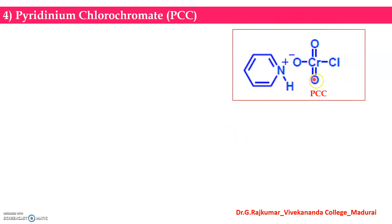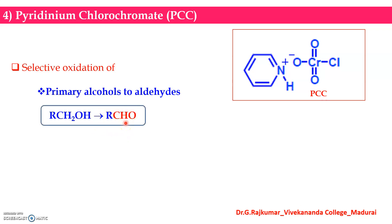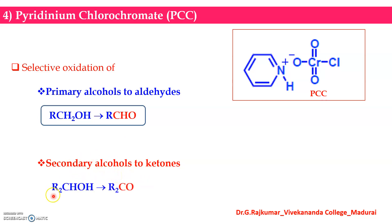PCC is a pyridinium chromium-based complex and can be used for the selective oxidation of primary alcohols into aldehydes. It can also be used to oxidize secondary alcohols into ketones.